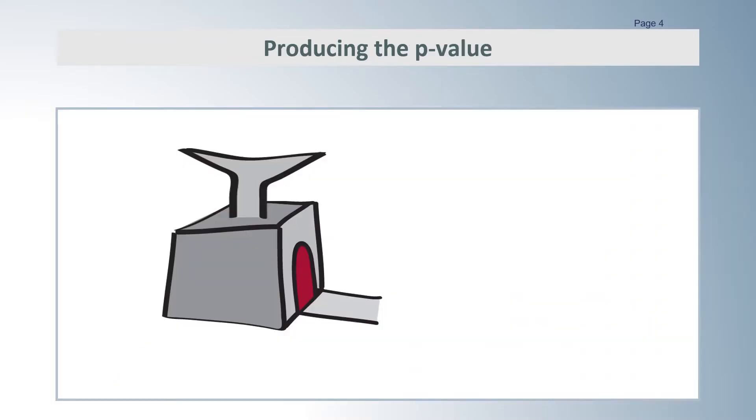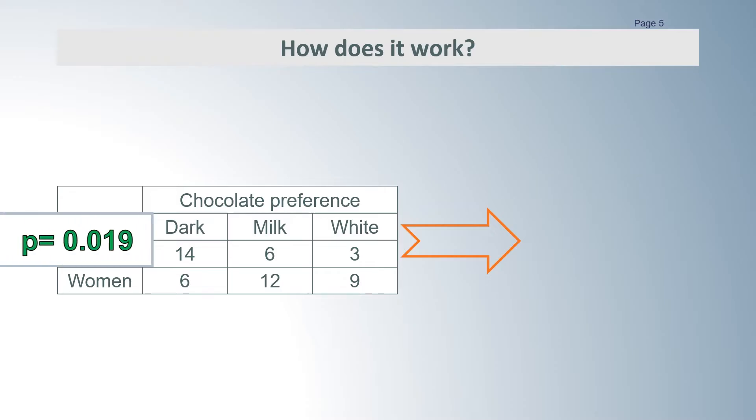As part of her analysis, Helen input the data from the sample of 50 people and the computer calculated a p-value of 0.019. Helen rejected the null hypothesis and decided that there was evidence of a relationship between chocolate preference and gender back in the population of her 5,000 customers. So let's see where that p-value of 0.019 comes from.